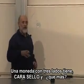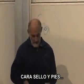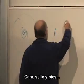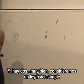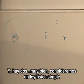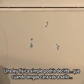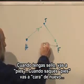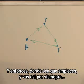A coin with three sides has heads, tails, and what else? Feet. Heads, tails, and feet. A simple law of physics could tell you that whenever you have heads, it goes to tails; whenever you have tails, it goes to feet; whenever you have feet, it goes to heads again. And then, wherever you start, you just cycle around endlessly forever and ever.